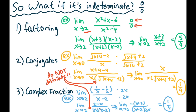Then we start to factor. We factor it into (x + 3)(x − 2) over (x + 2)(x − 2). We notice that (x − 2) is both on top and bottom, so we can cross it out. That becomes simply (x + 3) / (x + 2). Substituting again: two plus three is five, two plus two is four. When you put it in, it is a value. So how you solve this question is by factoring.